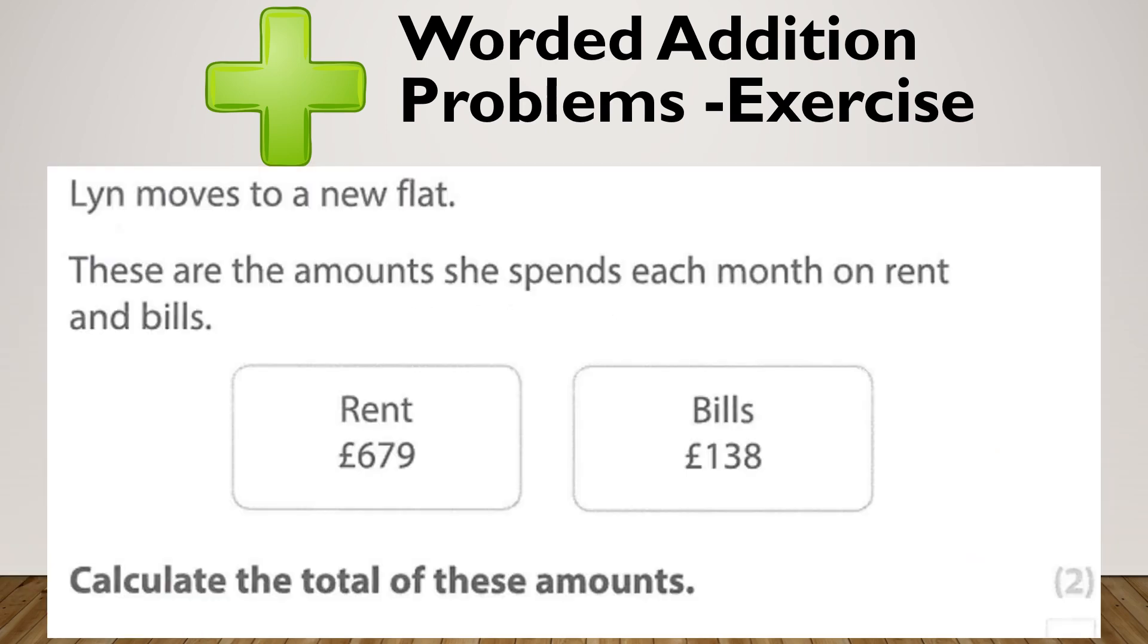Let's have a look at another one. Lynn moves to a new flat. These are the amounts she will spend each month on rent and bills. So rent, £679. Bills, £138. Calculate the total of these amounts. Pause the tape.